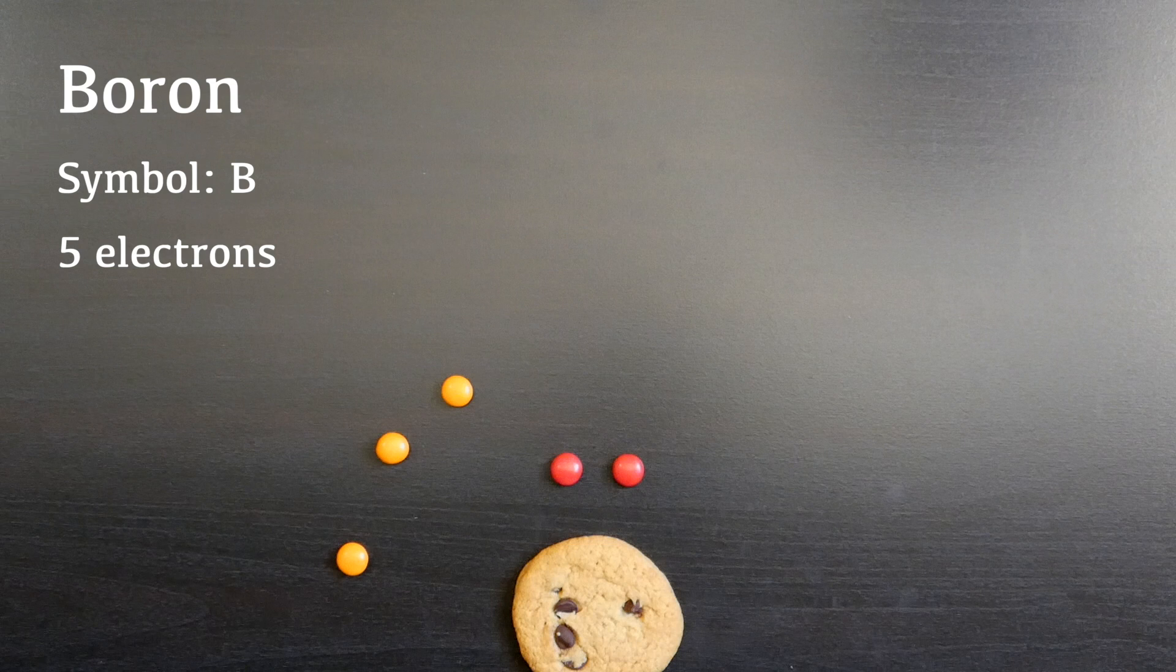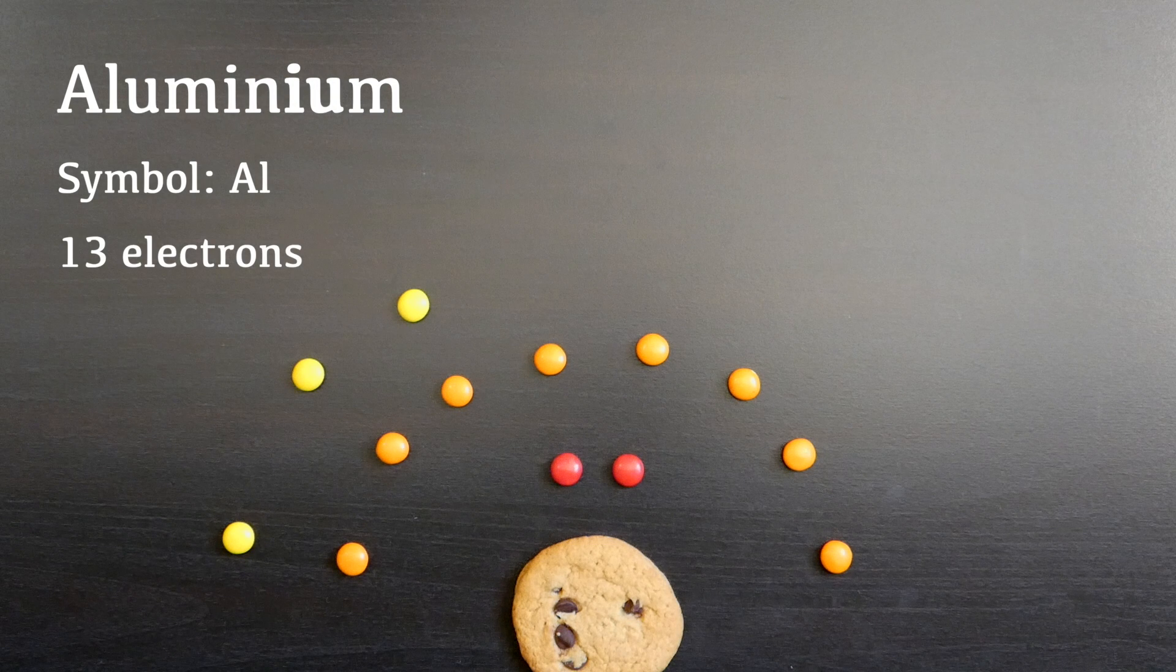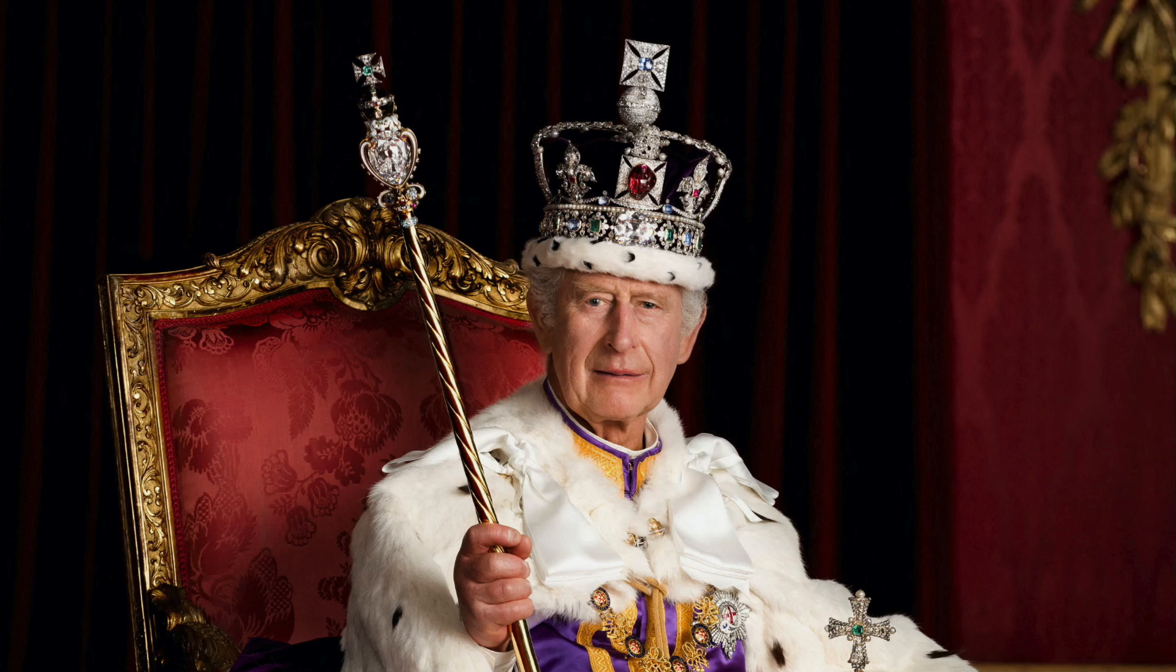Next, we should expect something similar in behavior to boron, and that is what we find. The thirteenth element is aluminium, and unfortunately for you American viewers, we use His Majesty's English in this household. Pure aluminium is a fantastic resource. It's light for a metal, but still decently strong, and beautifully reflective when it's polished.